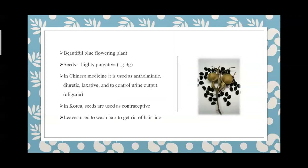Ipomoea nil — Krishnabijam in Malayalam — is a very purgative drug. The black seeds, named Krishnabijam for their color, can act as a purgative at a very low dose of one to three grams. This climber has very beautiful flowers that attract different kinds of butterflies.